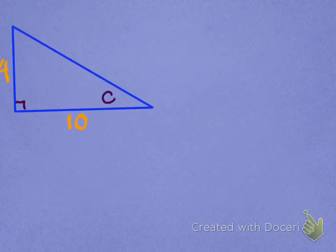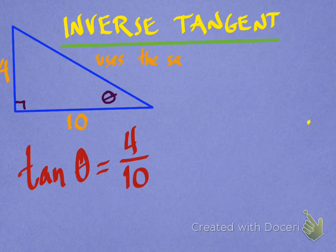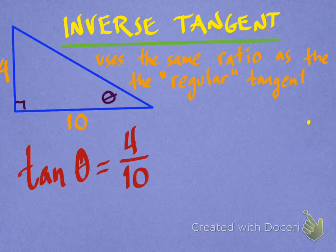Let's take a look at this problem here, where the tangent of theta is 4 over 10. All right, and what's really nice about the inverse tangent function is that it uses the same ratio, the exact same ratio, as the regular tangent function. So tangent is opposite over adjacent.